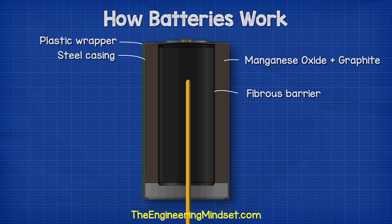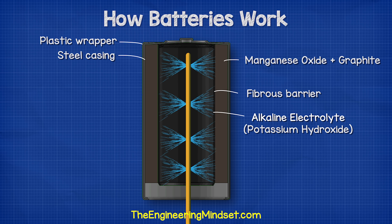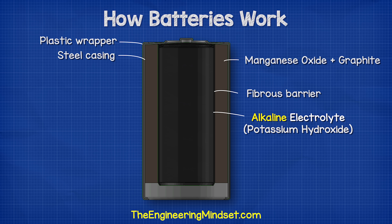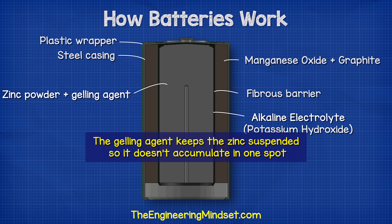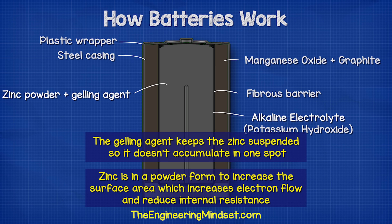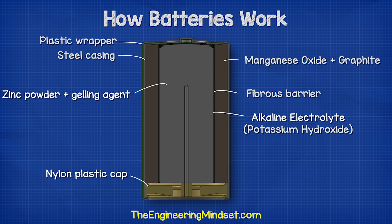An electrolyte liquid of potassium hydroxide is sprayed onto the separator during manufacturing. This soaks into and is absorbed by the anode material. The electrolyte used is an alkaline, which is why we refer to this type as an alkaline battery. On the other side of the barrier we have an anode, which is a paste made from zinc powder and a gelling agent. The gelling agent keeps the zinc suspended so it doesn't accumulate in one spot. The zinc is in powder form to increase surface area, which lowers internal resistance and improves electron transfer. The steel capsule is sealed with a nylon plastic cap, and a brass pin is inserted into the zinc with a steel cap placed over it.